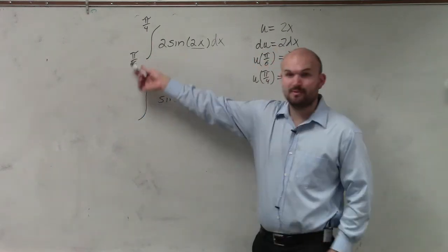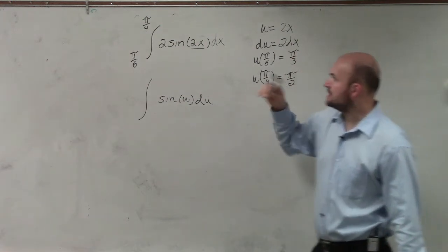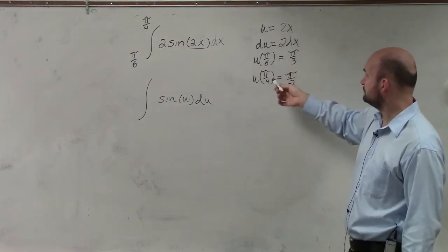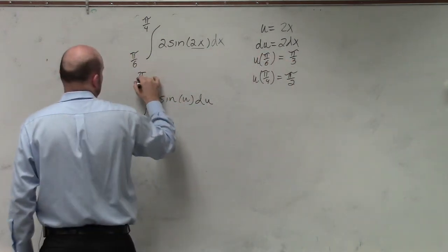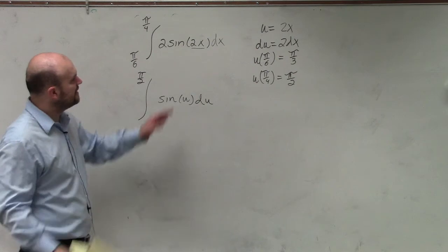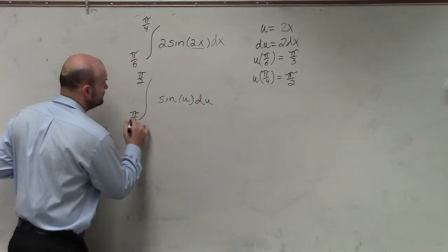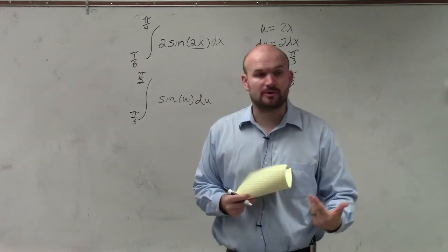we don't want to use the same lower and upper bounds we used for x. We've got to use the upper and lower bounds for u. So that's why we plugged in π over 4 into u, and we get π halves, and then we plug in π over 6, and we get π thirds. So if we're going to change our function in terms of u, we've got to change our upper and lower bounds.